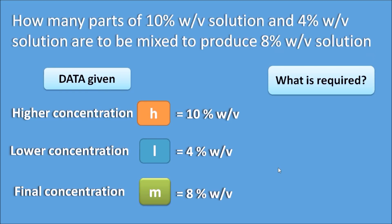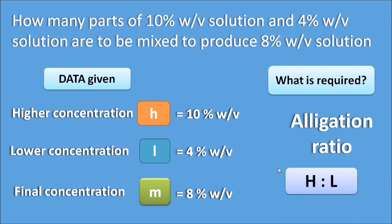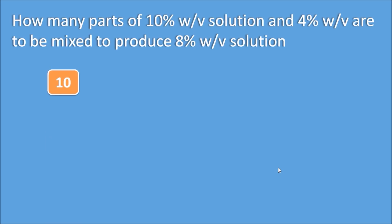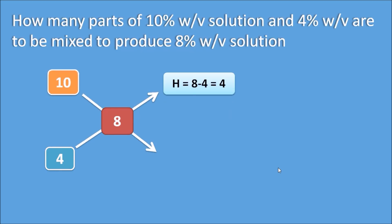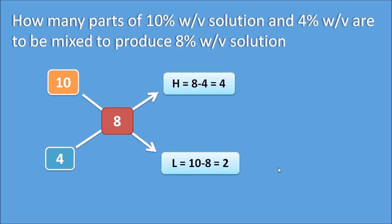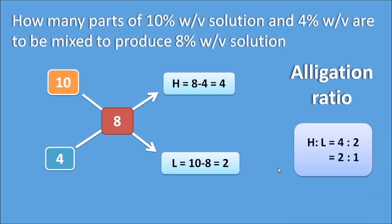We require the allegation ratio H is to L. Applying the allegation method: higher concentration is 10, lower concentration is 4, and intermediate concentration is 8. So H is equal to 8 minus 4, which equals 4, and L is equal to 10 minus 8, which equals 2. The allegation ratio is 4 is to 2, that is 2 is to 1. So two parts of the higher concentration should be mixed with one part of the lower concentration to produce the 8% w/v intermediate concentration.